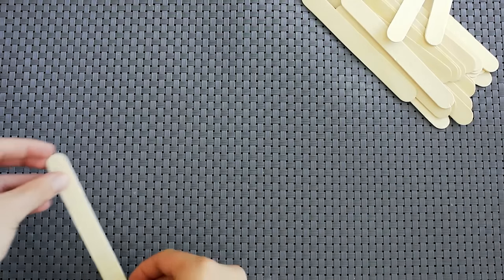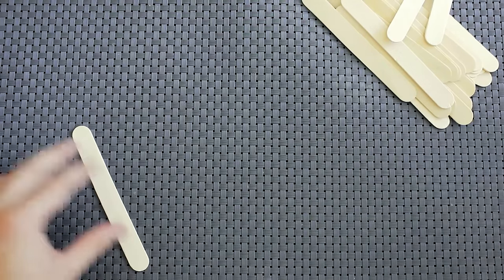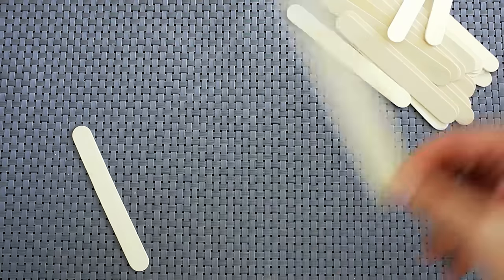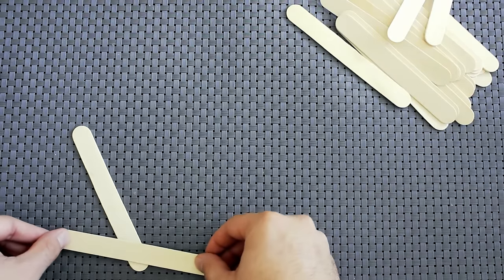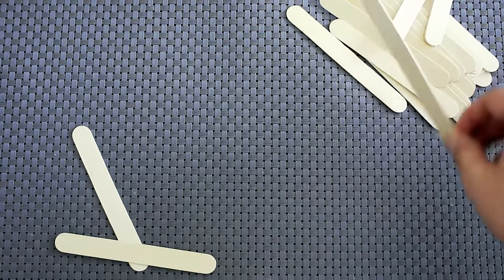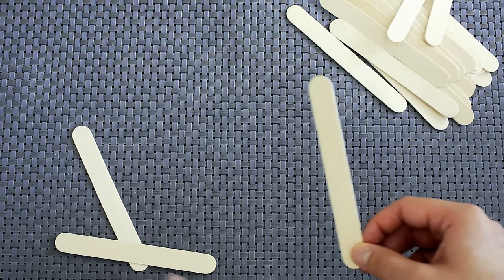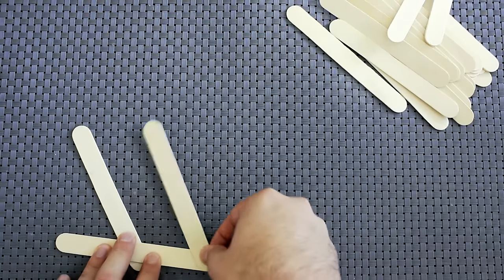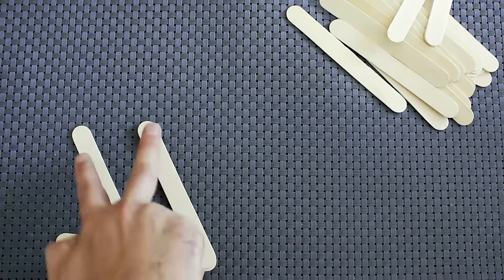To start, you're going to lay one stick at an angle and lay another stick across it so it crosses over about halfway. Your next stick, you're going to lay on top of this bottom stick, perfectly parallel to that first stick that you laid.